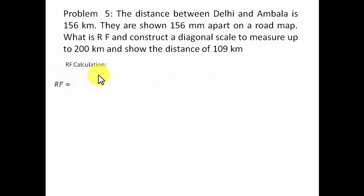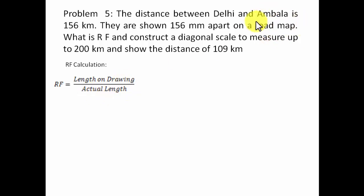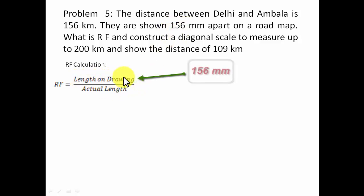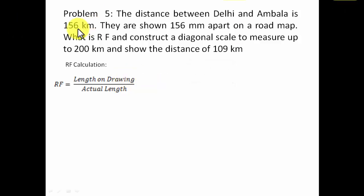We need to calculate the RF initially. It's given by the formula: length on drawing divided by actual length. A roadmap is a kind of drawing, and on this roadmap both cities — Delhi and Ambala — are separated by 156 millimeters. So the length on drawing is 156 millimeters, whereas the actual distance between these two cities is 156 kilometers. The numerator is in millimeters and the denominator is in kilometers, so conversion is needed.